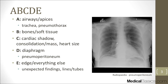C would be the cardiac shadow, seeing its size, as well as looking for any consolidations or masses. D would be anything in the diaphragm — like in this example, there's a pneumoperitoneum, which means there's air underneath the diaphragm. And E is going to be everything else: any unexpected findings, any lines or tubes, and making sure you look at the lungs themselves. That's the A, B, C, D, E approach.